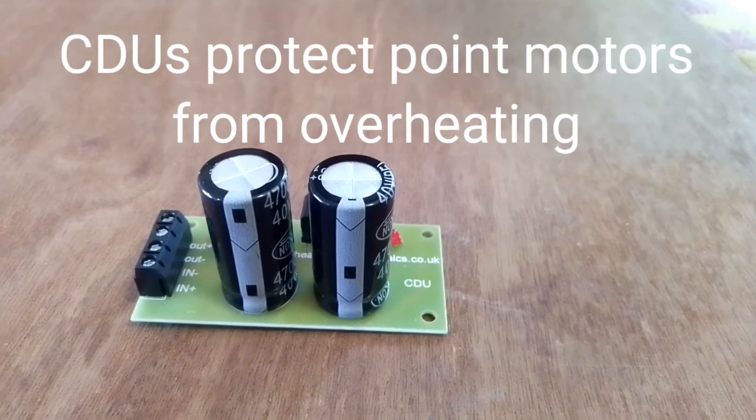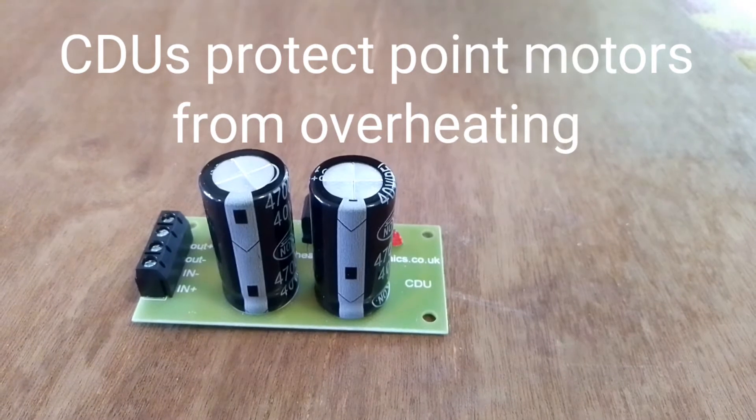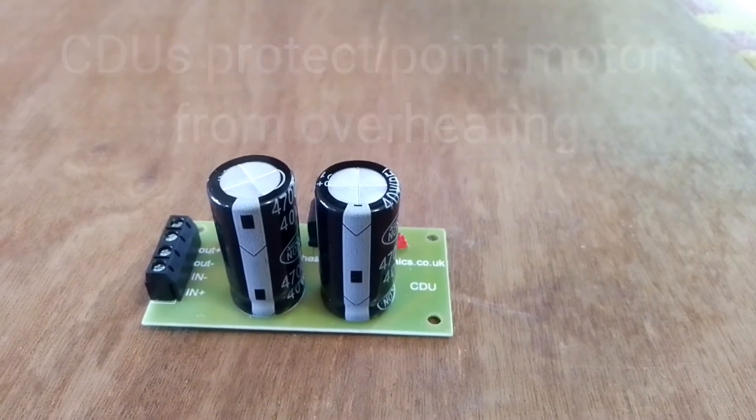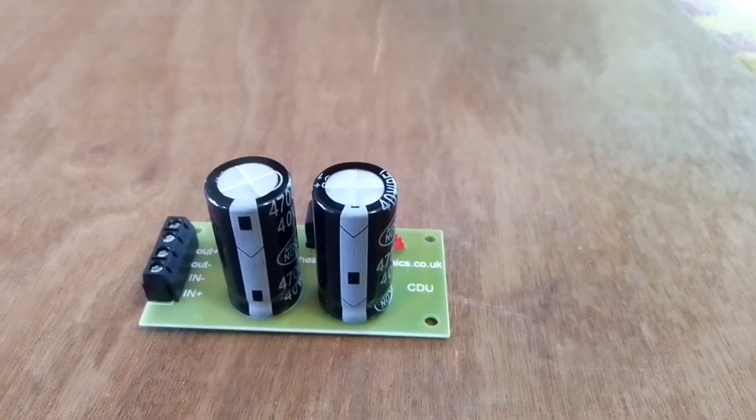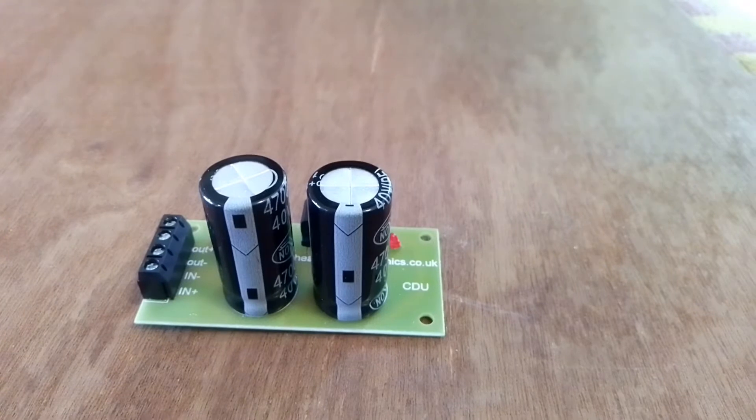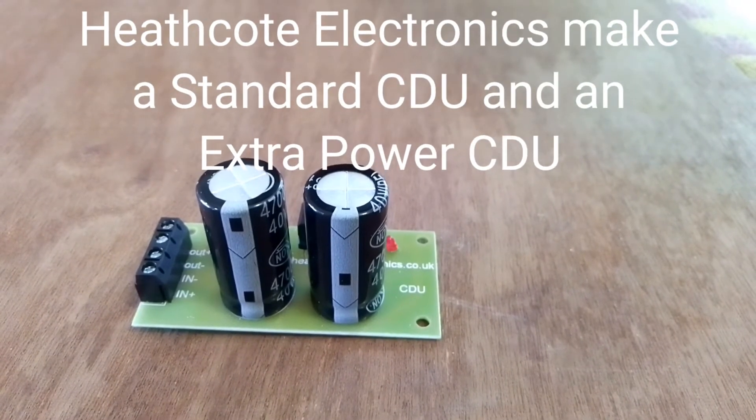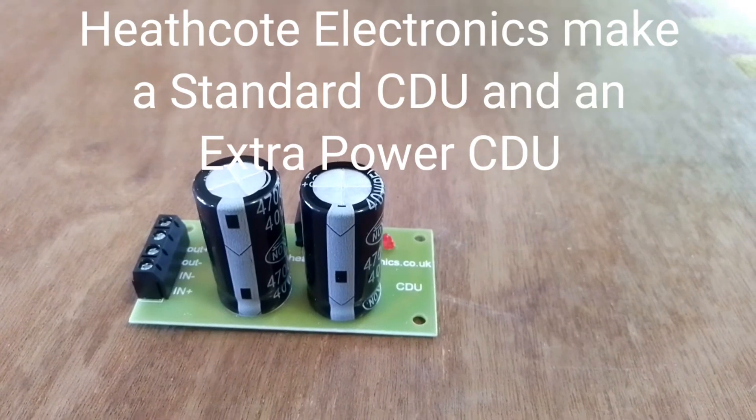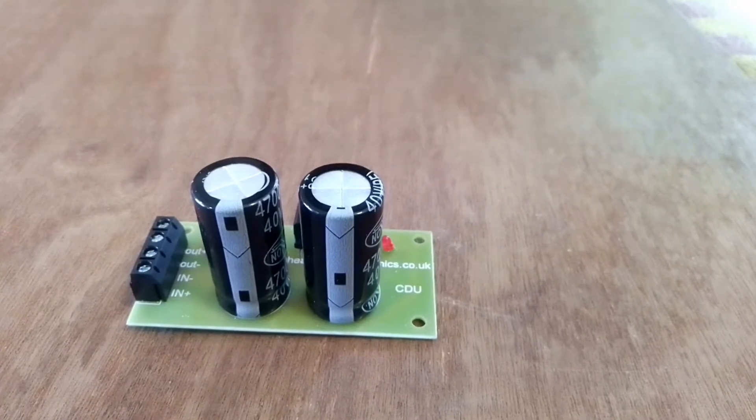The second reason to use a CDU is that it protects the point motors from burning out. The way it does this is that after it sent its pulse of current to energize them, it will switch off the current until the switch has been opened. In other words, if the switch was to jam shut or there was to be a short in the wires, then it would cut off the current and protect them from burning out.